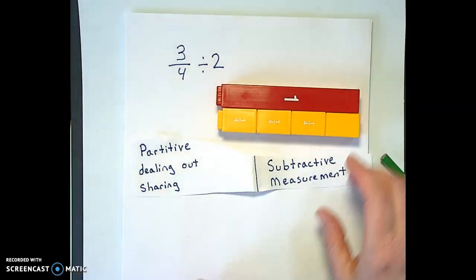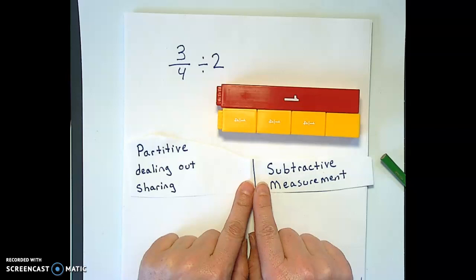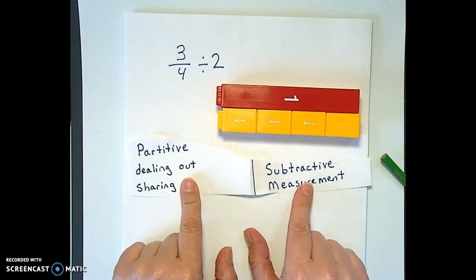Now we're going to do 3 quarters divided by 2 and again we have to decide if this is going to be partitive or subtractive division.